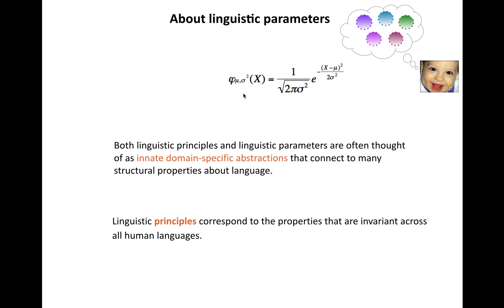These are innate and language-specific abstractions that connect to many different structural properties about language. The principles correspond to the properties that are invariant, the skeleton if you will, that does not change, that determines the shape of all human languages. This is the equation's form, the principle that explains the observed data.